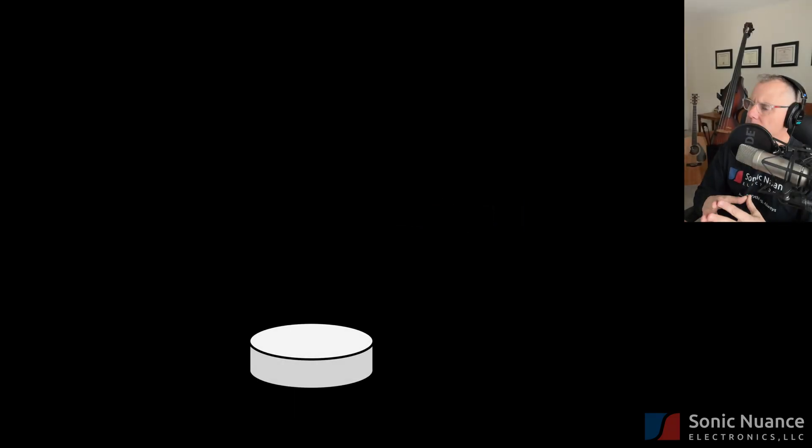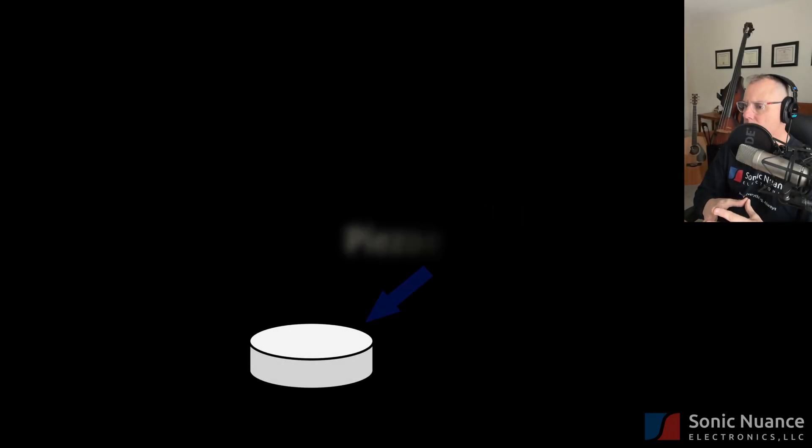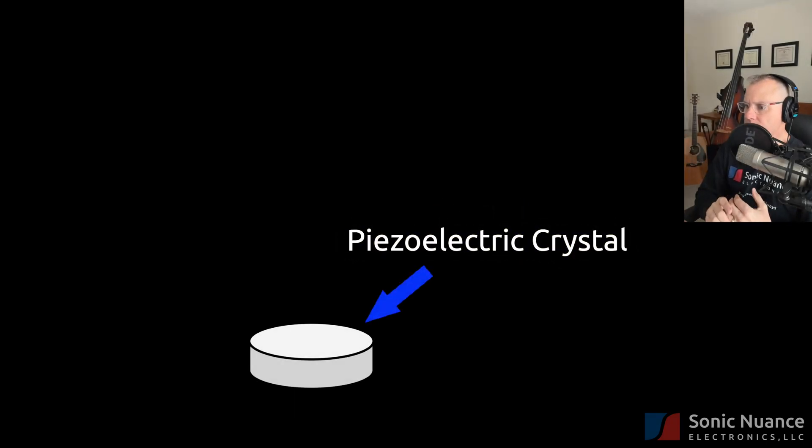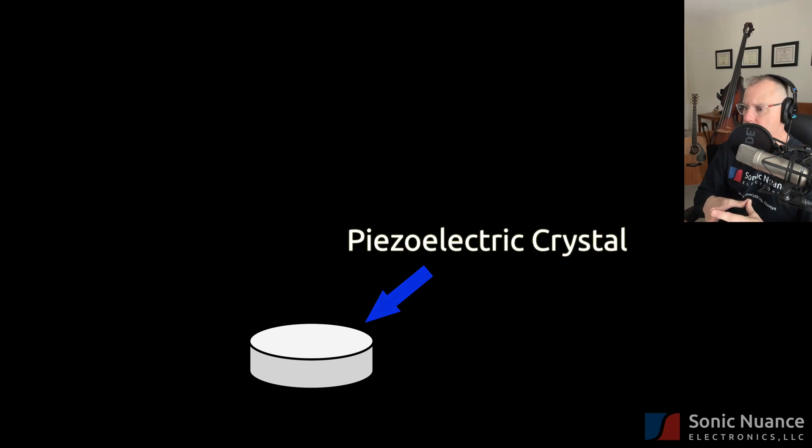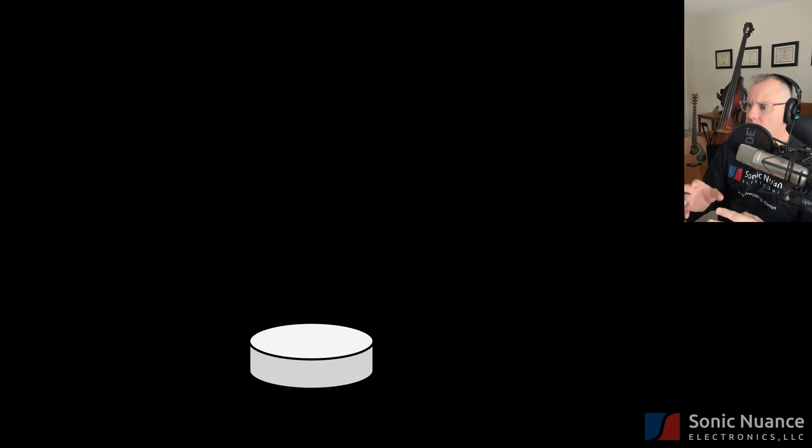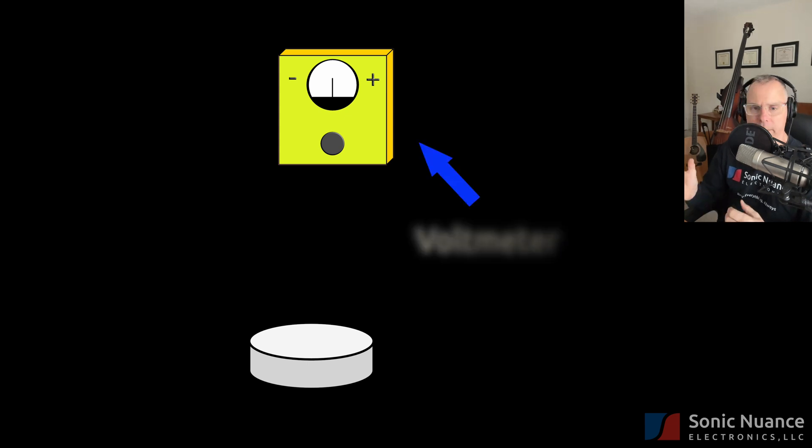Alright, let's talk about the piezo crystal and how it works. Here we have a cylinder that's representing our piezo crystal. Let's use something to measure the voltage generated by the crystal known as a voltmeter. At rest, the dial on the voltmeter is centered at zero.